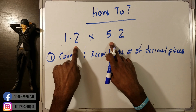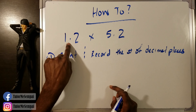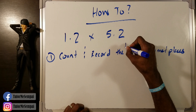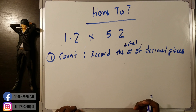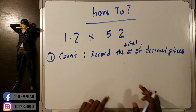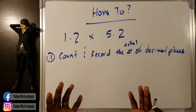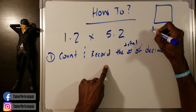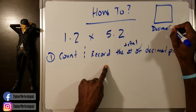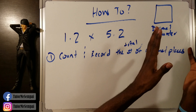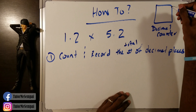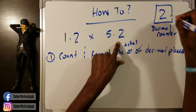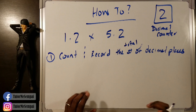What I mean by that is how many decimal spots do we have after the decimal? In 1.2 we have one, and in 5.2 we have one, so the total is going to be two. Count and record the total number of decimal places, and put it off to the side — hence the record. I'd say put a little box here and we can call this the decimal counter box. I'm going to put it somewhere so I always see it and don't forget it. The decimal counter is two.